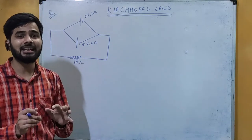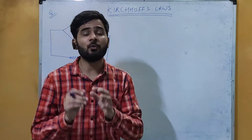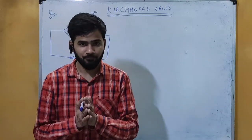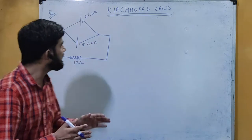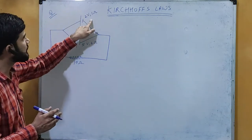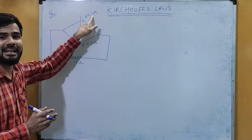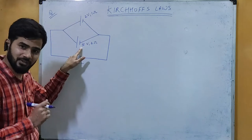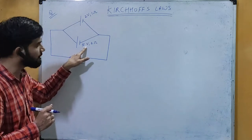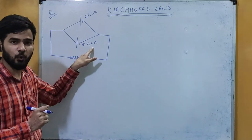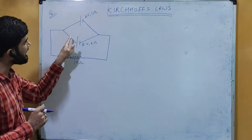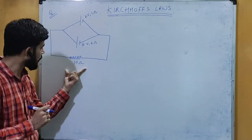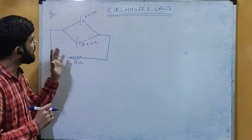Here I have a circuit and in this circuit we have to find the value of current through each cell. We have one cell of voltage 2 volt and internal resistance 1 ohm, we have another cell of EMF 5 volt and internal resistance 2 ohm, and they both are connected in parallel with another resistance of 10 ohm.